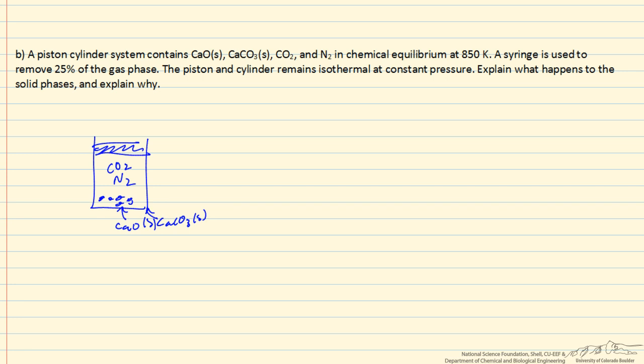What we're going to do is remove some volume, not selective, so the volume has the same mole fractions as the original gas phase. If we remove 25% of the gas phase this way, keeping it isothermal, carrying out in this piston and cylinder arrangement, what happens to the solid phases?